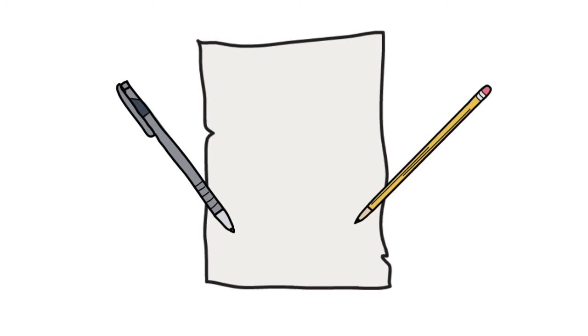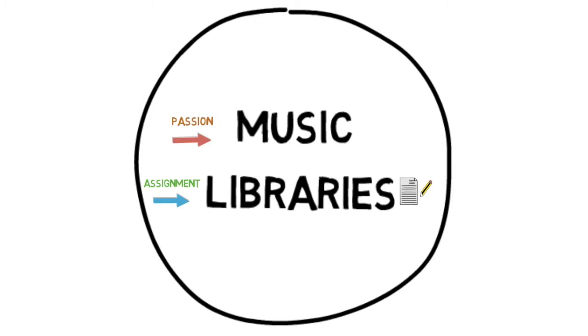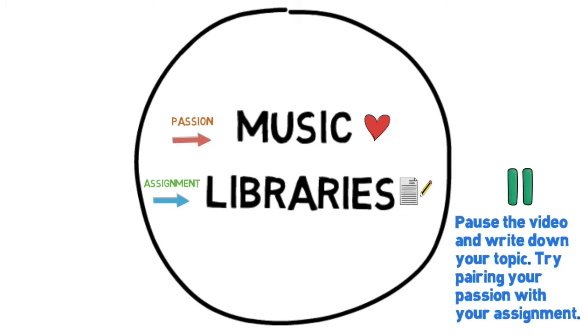To get started, grab a blank piece of paper and a pen or pencil. First, draw a circle in the middle of the page and write your idea for a paper topic inside. If you're not sure what to write, you can start by connecting your class or assignment with something you're passionate about. You can pause the video here and take a few minutes to write down your topic.